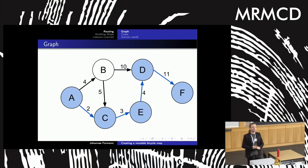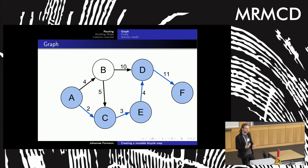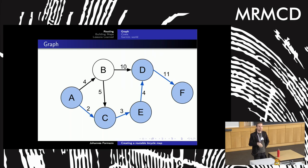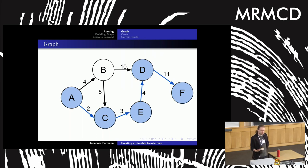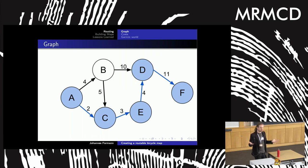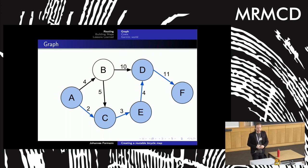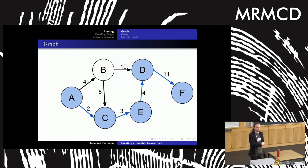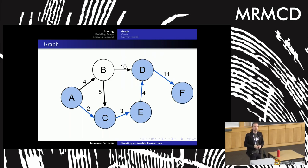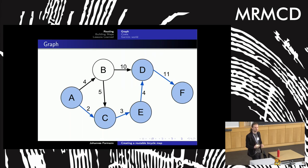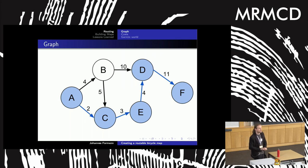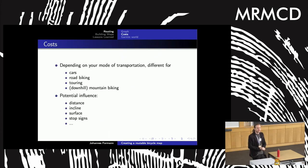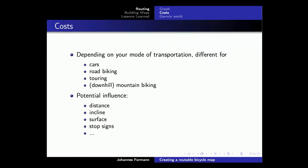What is a routable map from a technical point of view? In the end, it's a graph where nodes represent points where different roads meet, and the lines between them represent roads or pieces of roads. Of course, it's a rated graph, so you can use different algorithms to find the shortest path. And 'shortest' is not measured in meters or kilometers, but determined by the lowest cost or rate. The interesting question is how you determine that rate, and this is very different depending on the mode of transportation you're using.